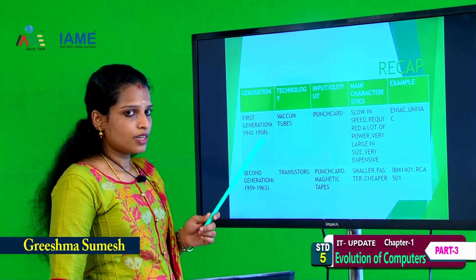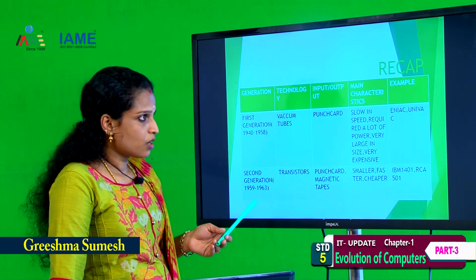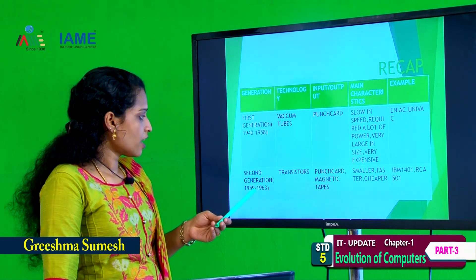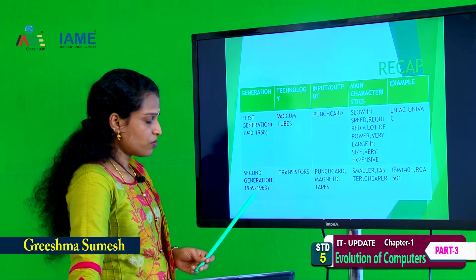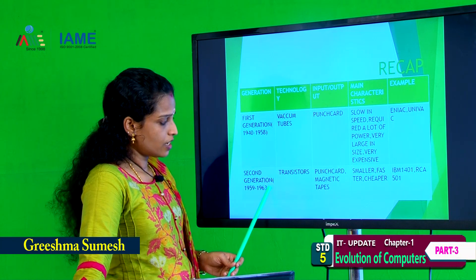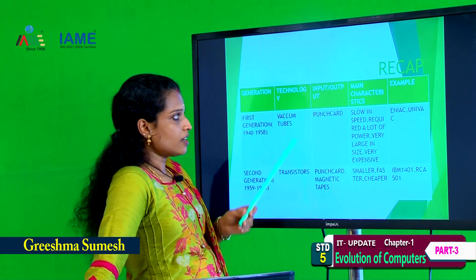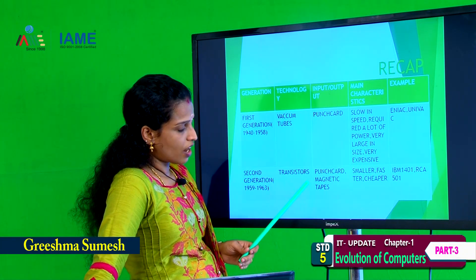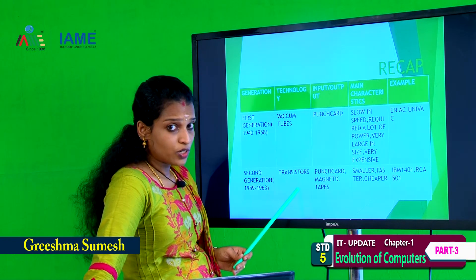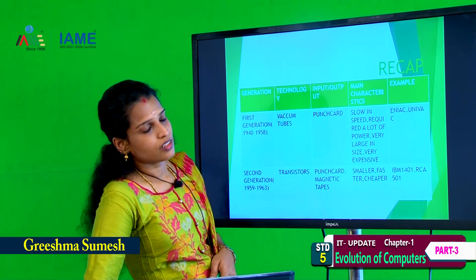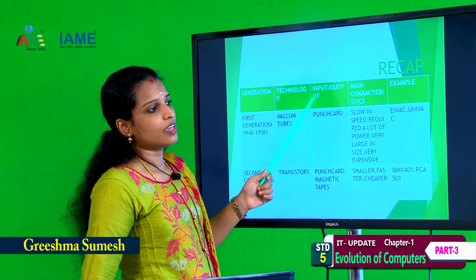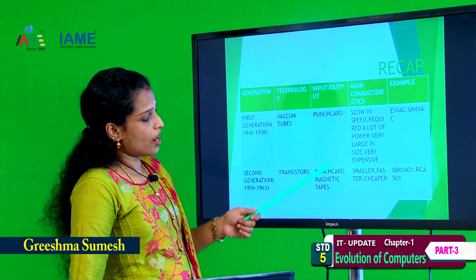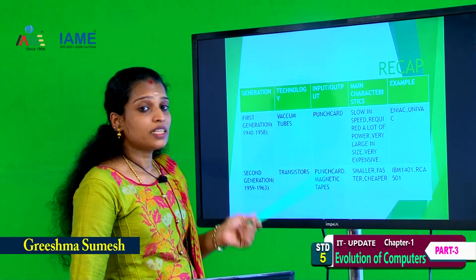Second generation computer, 1959 to 1963. Second generation computer used transistors. Input and output devices are punch card and magnetic tape.